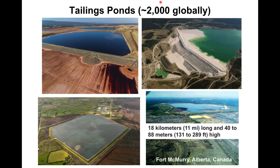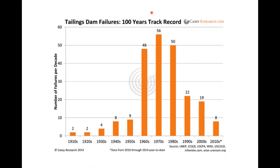There are approximately 2,000 tailings ponds around the world. We discussed downstream, upstream, and centerline construction. This chart shows the number of tailings dam failures per decade over the last hundred years. The y-axis is failures per decade. With at least 2,000 tailings dams on the planet, the actual failure rate is very low compared to the total number operating. Tailings dams are a relatively new invention, so going back to the 19th century, they weren't constructed the way they are now.